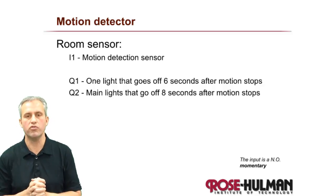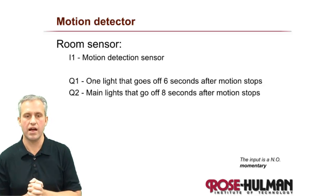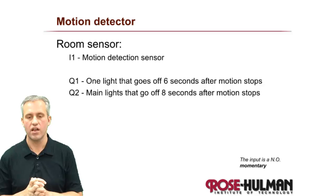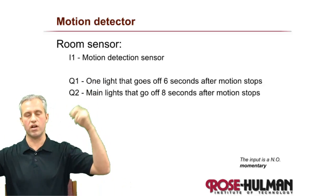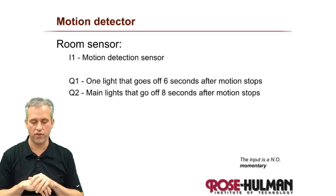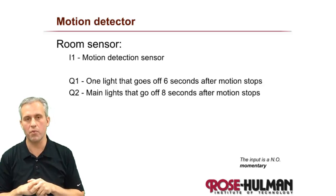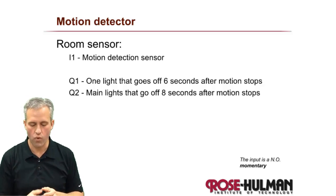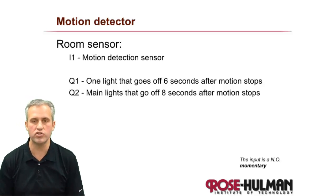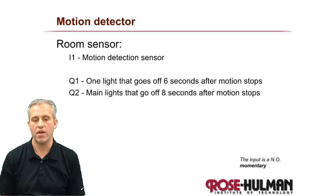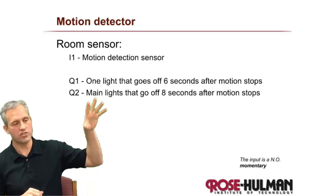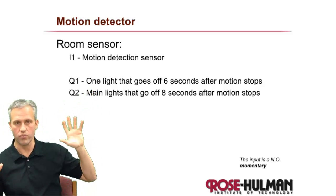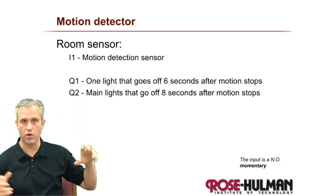The purpose of this problem was to make you think about a real system that uses on delay timers. That's the Christmas tree solution. The next example is motion detection in a room — like when you move in a room and the lights turn on, and after a while they turn off.